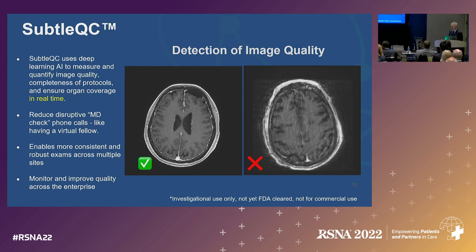This kind of picture might get a check mark — it's a quality image with no motion and high SNR. This is a low-quality image where the patient moved. We may want to recommend re-scanning that patient.